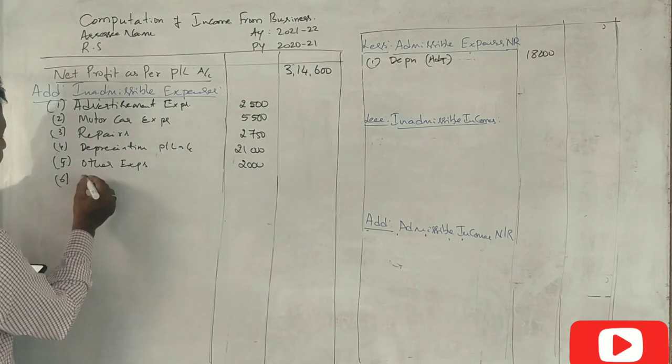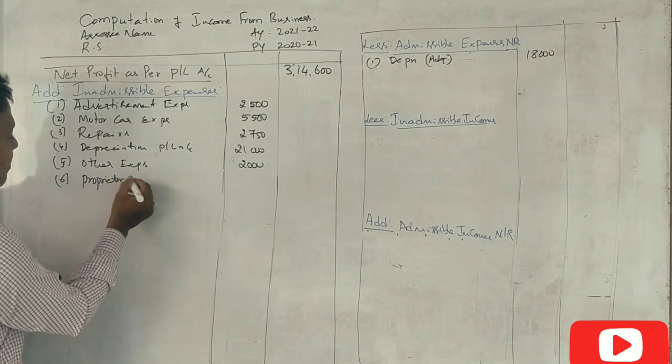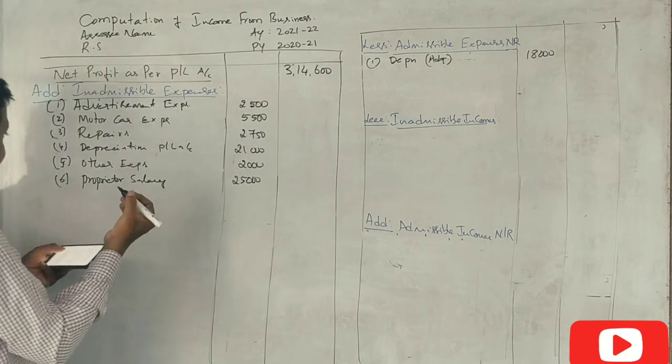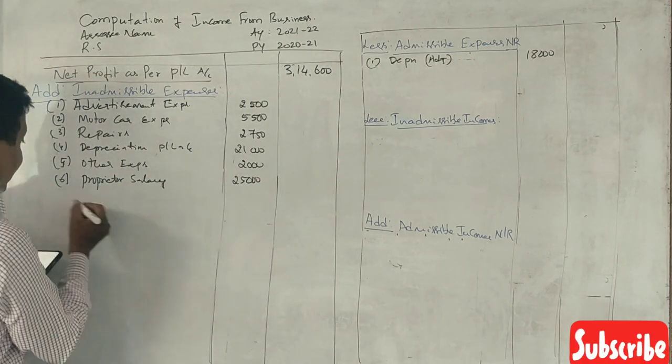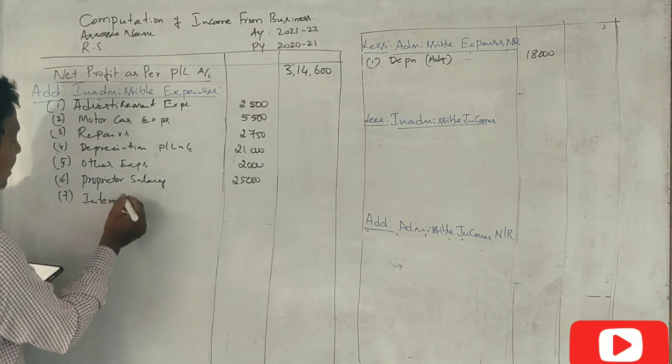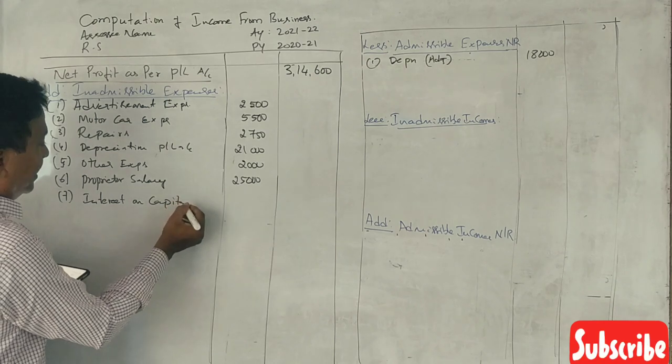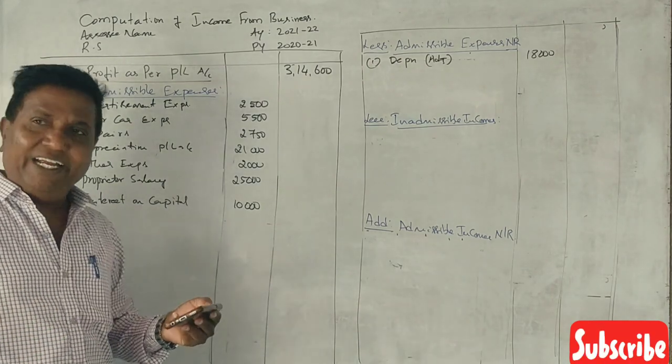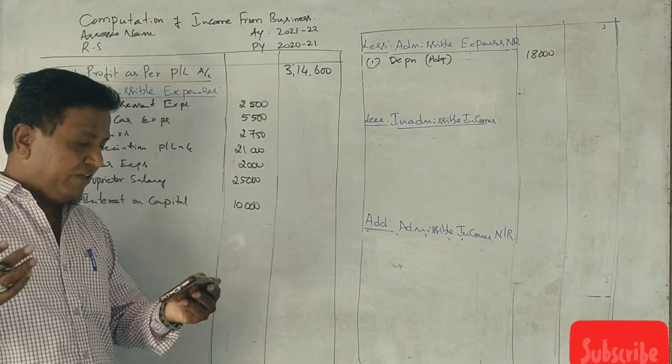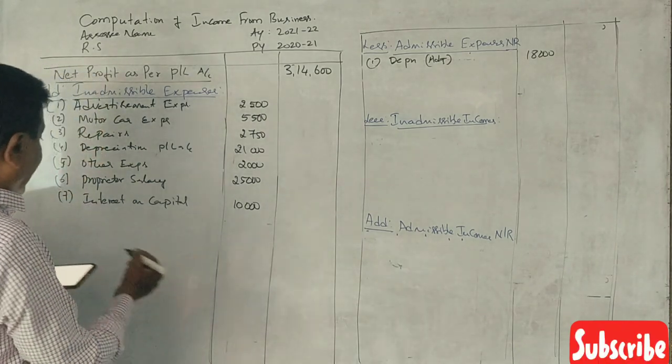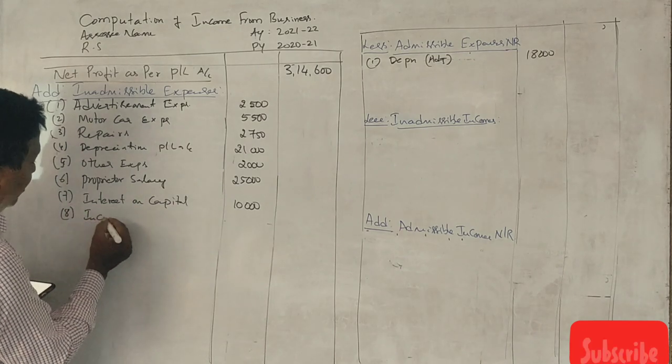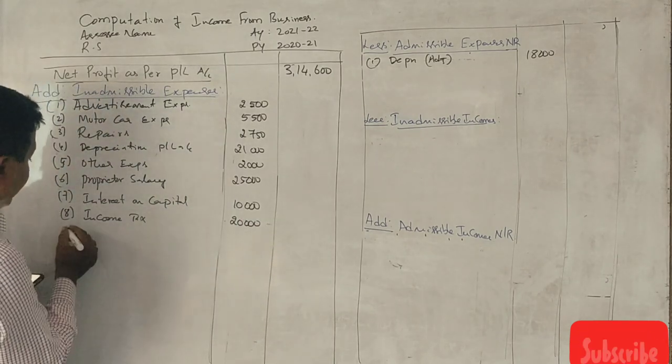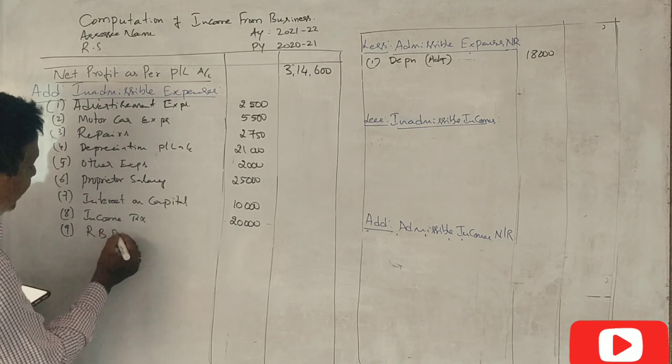Debit side of the items. Proprietor salary, office salary is paid. Proprietor salary, this is purely inadmissible, 25,000. General expenses business. Interest on capital, 10,000. General expenses business. Bad debts business. Advertisement. Fire insurance business. Income tax, this is important, 20,000. Reserve for bad debts, RBDD, 12,000.